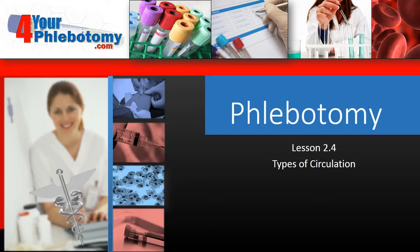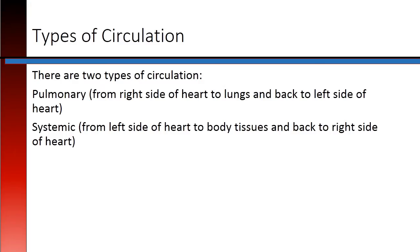Phlebotomy Lesson 2.4: Types of Circulation. There are two types of circulation. Pulmonary, which goes from the right side of the heart to the lungs and back to the left side of the heart. And systemic, from the left side of the heart to the body tissues and back to the right side of the heart.